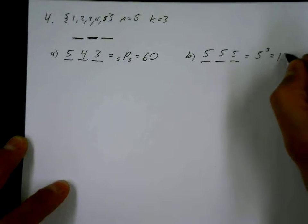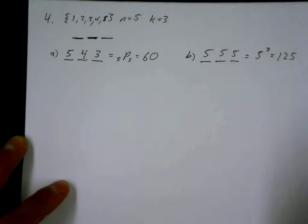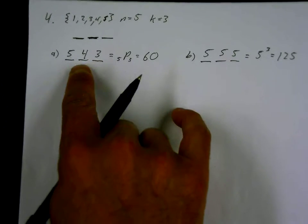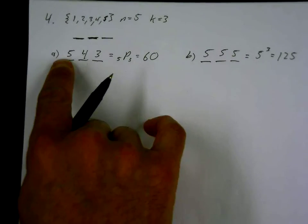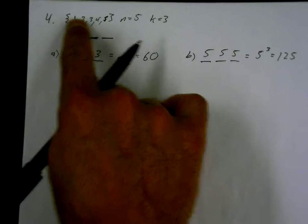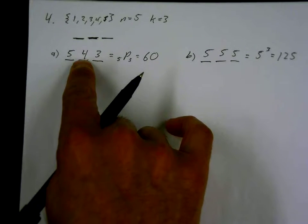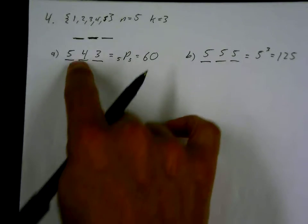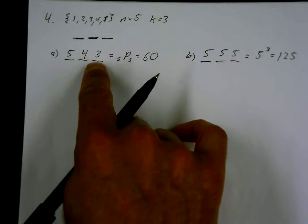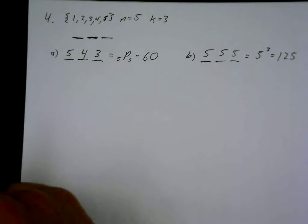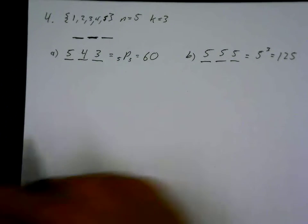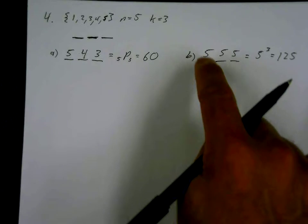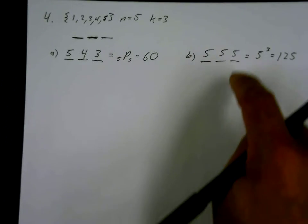So you see the difference? Repetition not allowed: if I place a three there, I only have four other numbers to choose from, then three. That's how I make the permutation. Whereas with repetition allowed, I could put the three down, then the three again, then three again — every time I reach into that bag, there are five numbers I can possibly place.